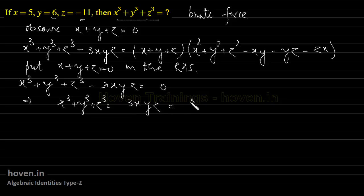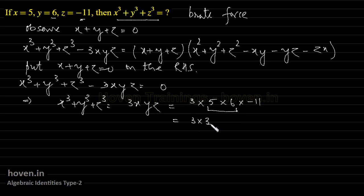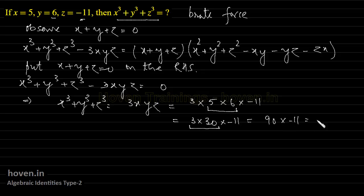So x cube plus y cube plus z cube equals 3 into 5 into 6 into minus 11, which is equal to 3 into 30 into minus 11, which is equal to minus 990, which is the answer in this case.